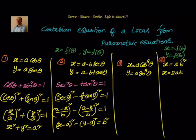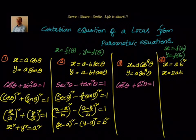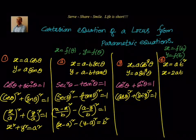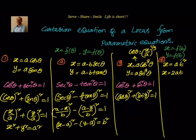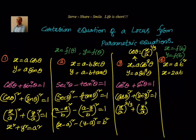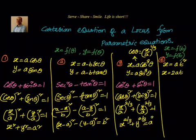The next one: x = a·cos³θ, y = a·sin³θ. Again using cos²θ + sin²θ = 1. Here cosθ = (x/a)^(1/3) and sinθ = (y/a)^(1/3). Substituting: (x/a)^(2/3) + (y/a)^(2/3) = 1, which gives x^(2/3) + y^(2/3) = a^(2/3).